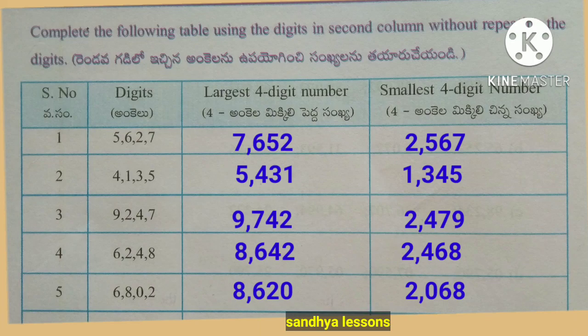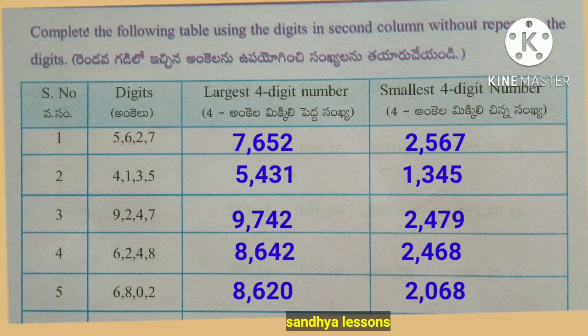With digits 9,2,4,7: largest 4-digit number is 9,742; smallest is 2,479. With digits 6,2,4,8: largest is 8,642; smallest is 2,468. With digits 6,8,0,2: largest is 8,620; smallest is 2,068.